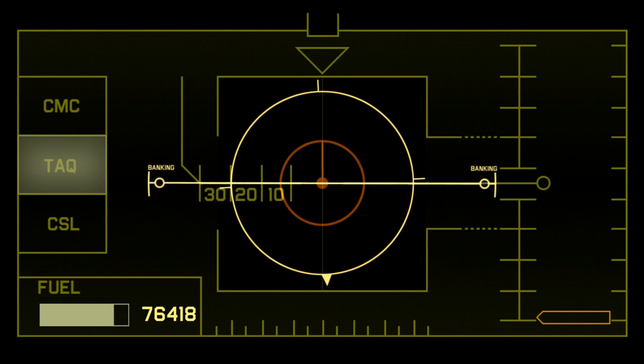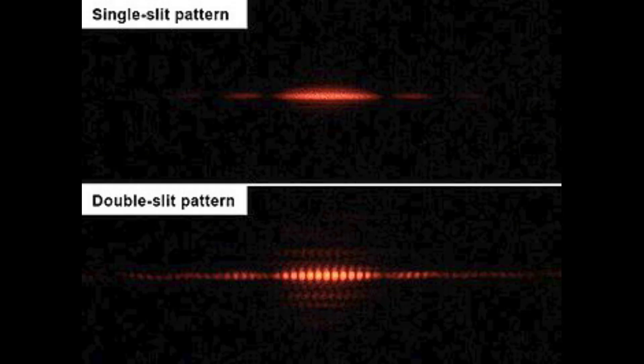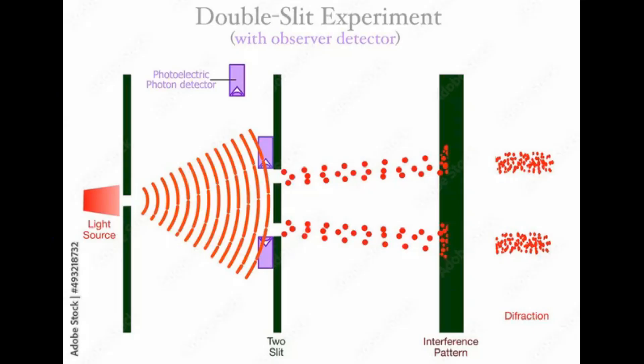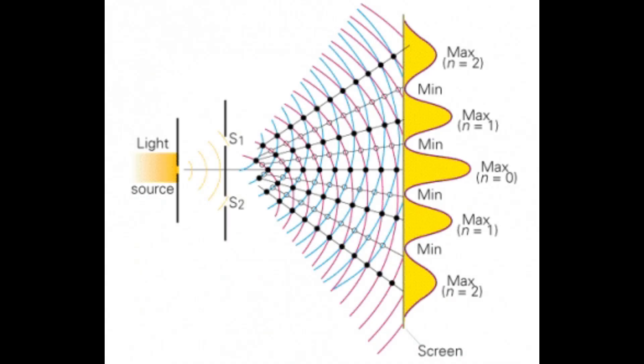Once a measurement determines which slit a photon went through, the interference pattern disappears, indicating that the act of measuring changes the behavior of the system. This reveals a fundamental aspect of quantum mechanics: observers cannot be completely objective, because their measurements affect the reality they observe.